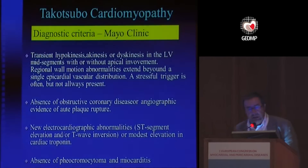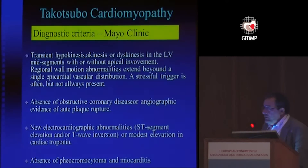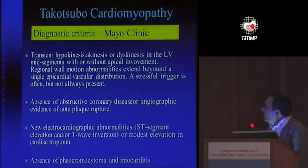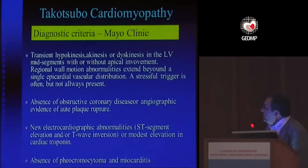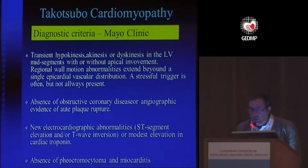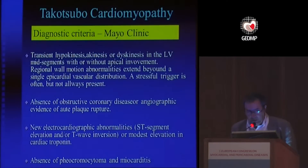The diagnostic criteria from the Mayo Clinic are well known. The hypokinesia or dyskinesia in left ventricular mid-segments or apical segments are the main diagnostic criteria, but it is necessary to prove that there is no coronary artery disease or other diseases like pheochromocytoma or myocarditis — which, as you have seen, can make diagnosis very difficult in the acute phase.